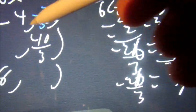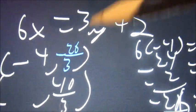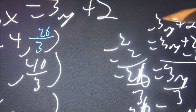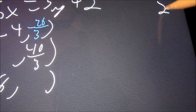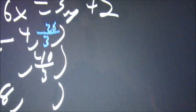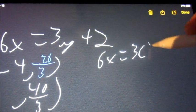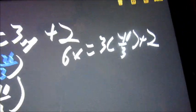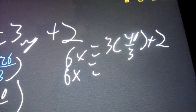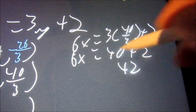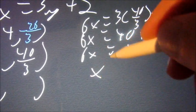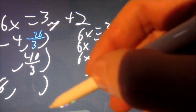Then we put 40 over 3 in for y: 6x equals 3 times 40 over 3 plus 2. The 3s cancel, giving 6x equals 40 plus 2. Adding gives 42 equals 6x. Divide both sides by 6 — x equals 7.